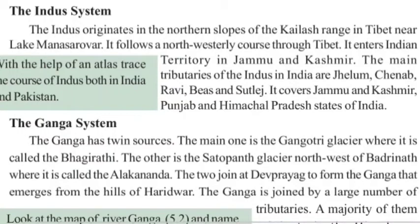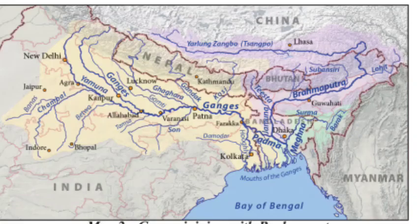The Indus river system covers the states of Jammu and Kashmir, Punjab, and Himachal Pradesh.